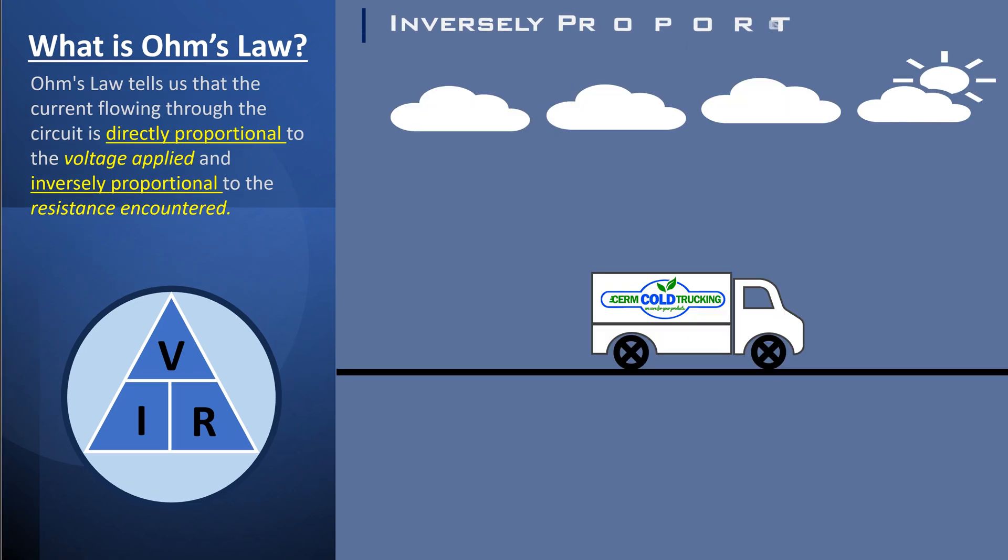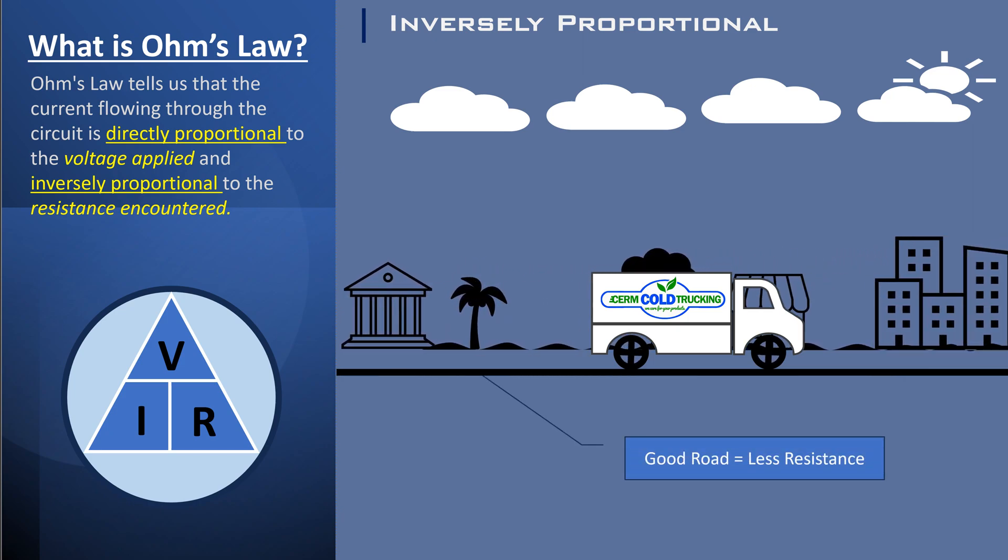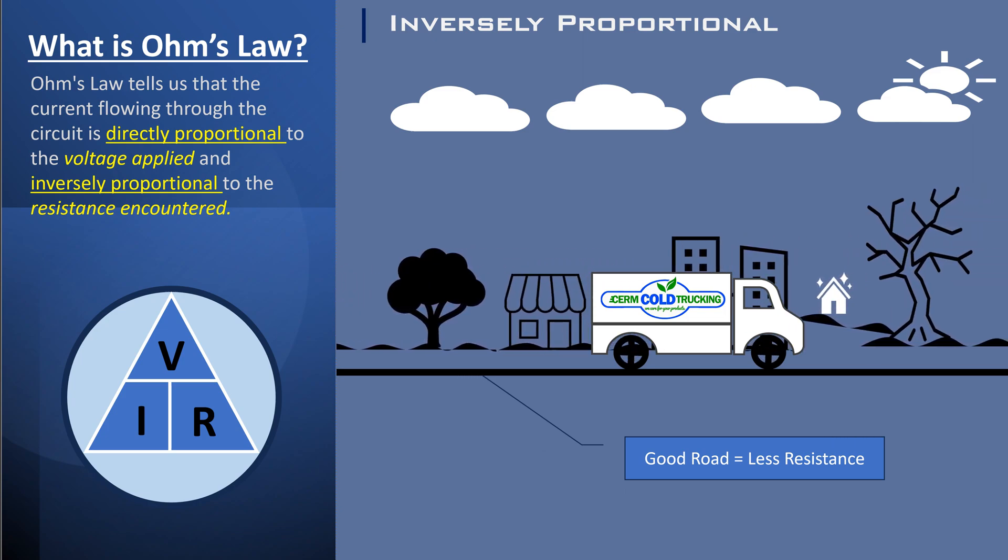Now, let's solidify our understanding with a real-life example related to resistance. Imagine driving on a calm day with no resistance, such as wind or a bumpy road. In this scenario, there is minimal resistance to your car's motion,